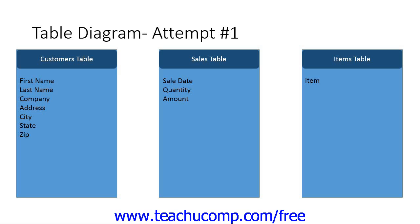Once you have a rough idea of what you would like to record and what tables you will need, you must then ensure that each table has what is called a primary key. A primary key is a column, or a combination of column values, that will produce a unique value for each row in a table. Many times, an additional column is added to the tables in order to provide this unique identification. You can assign each record a unique number within an ID column.